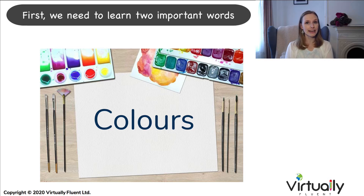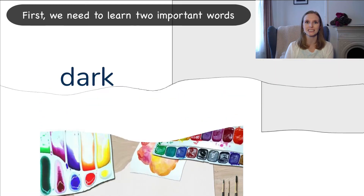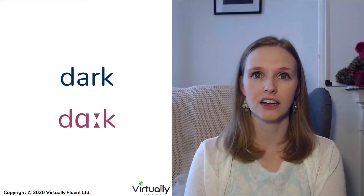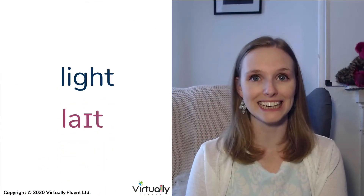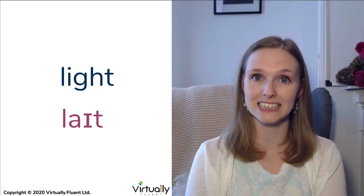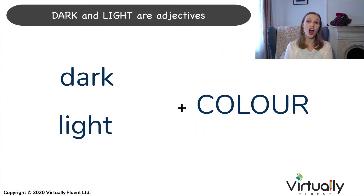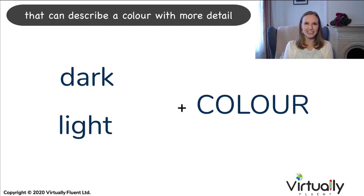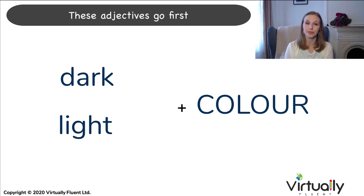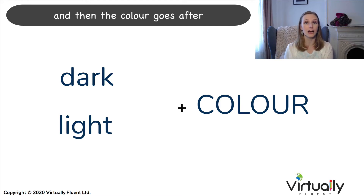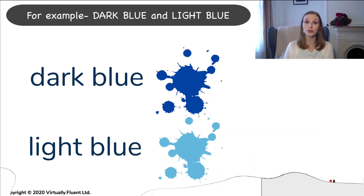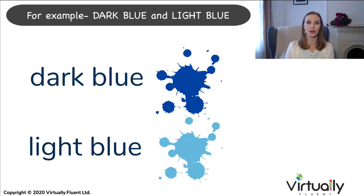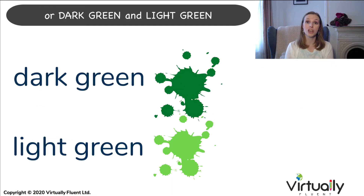First, we need to learn two important words: dark and light. Dark and light are adjectives that can describe a colour with more detail. These adjectives go first and then the colour goes after. For example, dark blue and light blue, or dark green and light green.